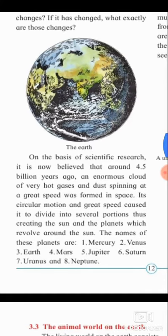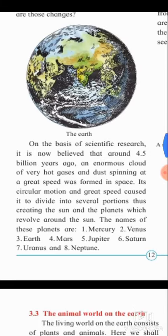it is now believed that around 4.5 billion years ago, an enormous cloud of very hot gases and dust, spinning at a great speed, was formed in space. Its circular motion and the great speed caused it to divide into several portions, thus creating the sun and the planets which revolve around the sun. The names of these planets are Mercury, Venus, Earth, Mars, Jupiter, Saturn, Uranus, and Neptune.